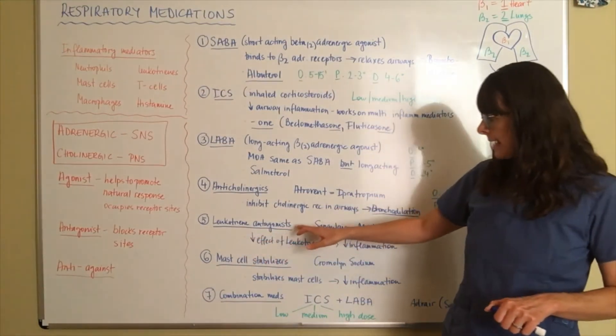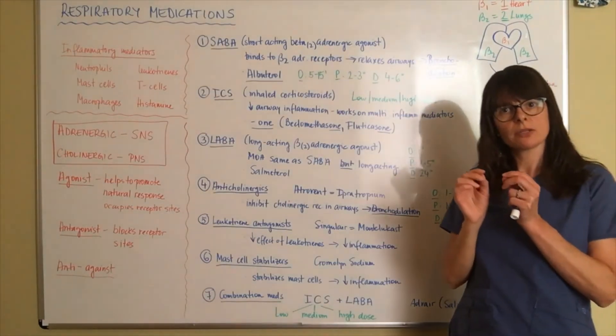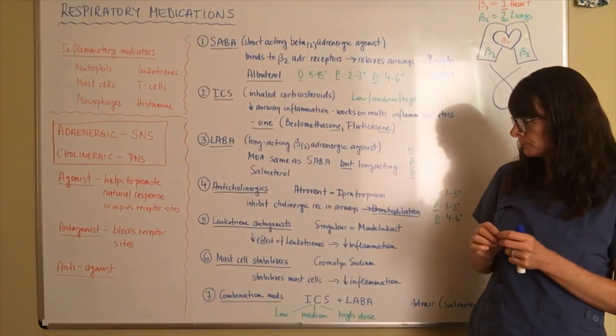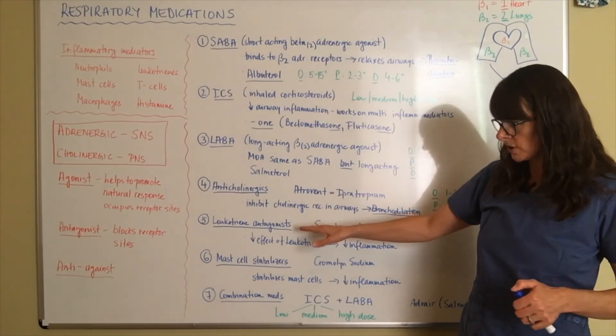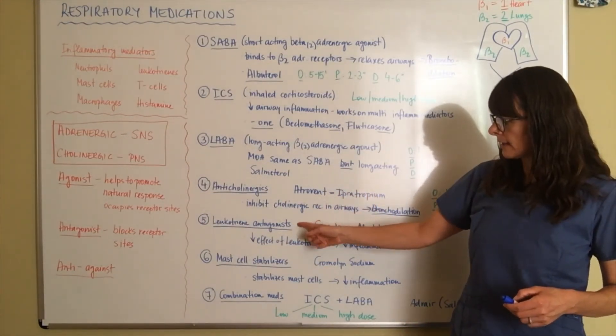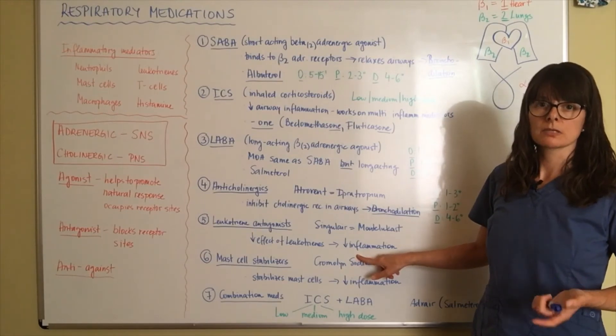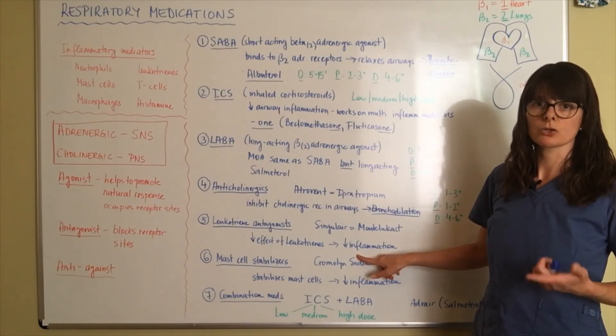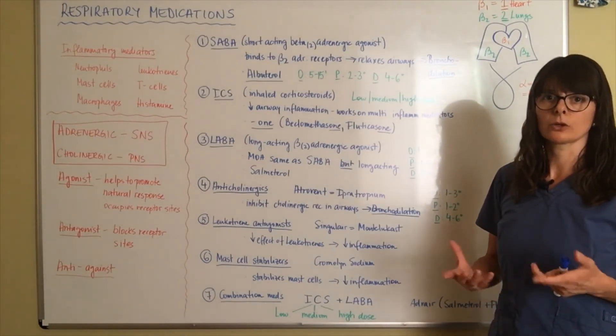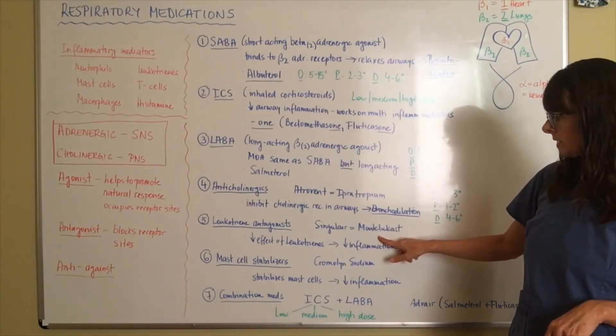Now, number five here, leukotriene antagonists. So you can see here, leukotrienes are one of those inflammatory markers we reviewed earlier, and they respond to very specific inflammation response. And so these leukotriene antagonists, they block the receptor sites for the leukotrienes, which usually would cause inflammation, and therefore they antagonize that. So they decrease the effect of the leukotrienes and cause decreased inflammation. And that would be specifically a desired response in patients with asthma, where there's a lot of underlying inflammation and other respiratory conditions that have inflammation at their core. An example of a leukotriene antagonist would be Singulair, or montelukast is the generic version of it.